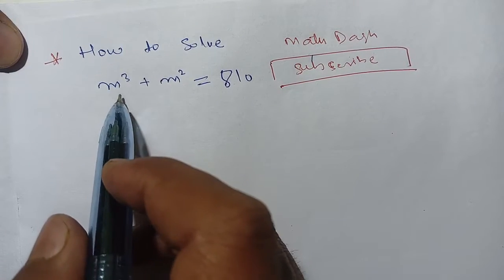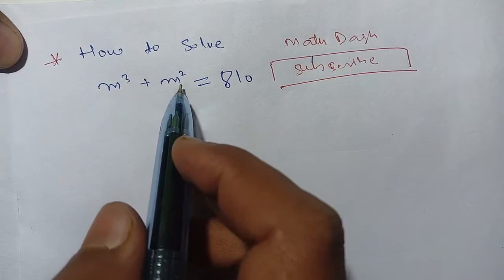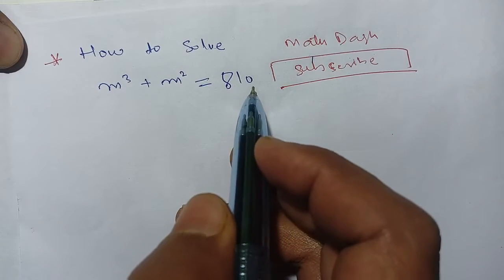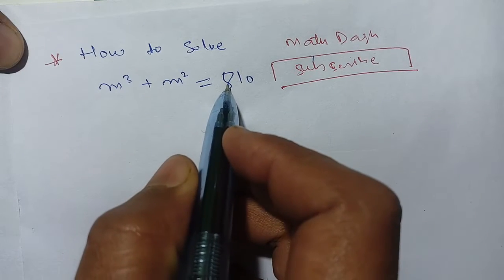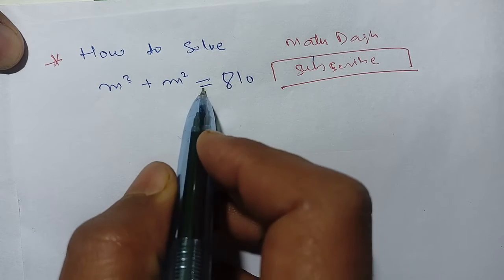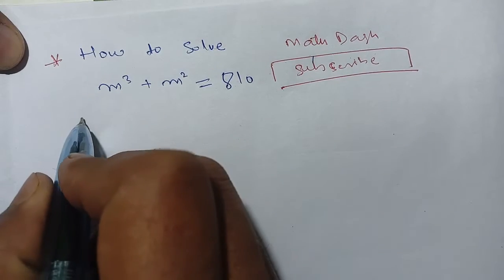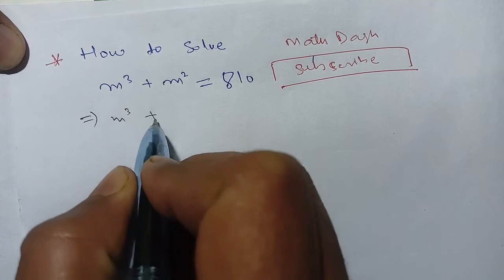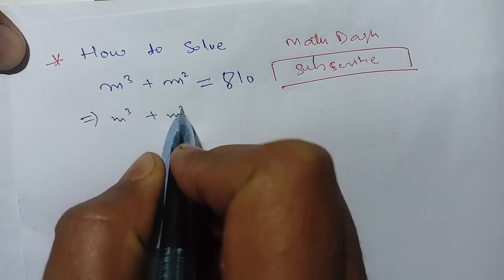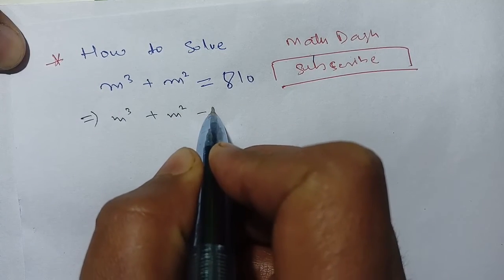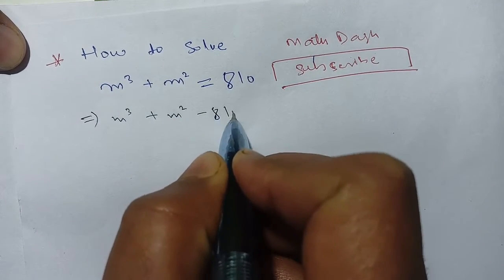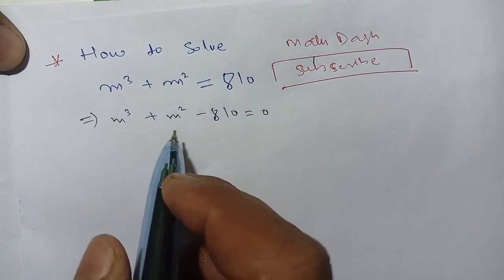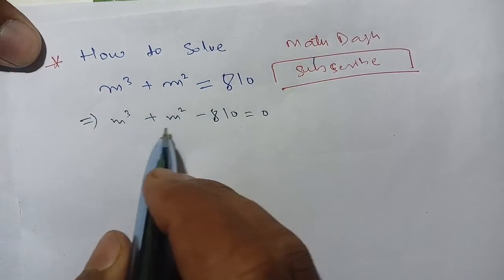How to solve m³ + m² = 810. We shift all terms to the left-hand side to get m³ + m² - 810 = 0.